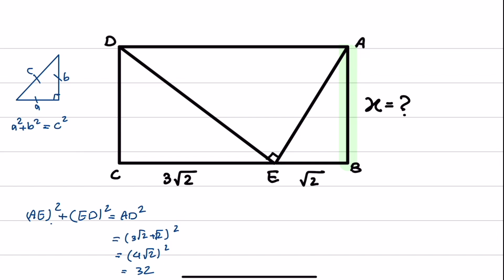We can write AE as X squared plus square root of 2 squared. And for ED, we can write again, X squared plus 3 times square root of 2 squared. And we can write this as X squared plus 2 plus X squared plus this one will give us 18. And if we simplify this, it will be 2X squared plus 20 is equal to 32.